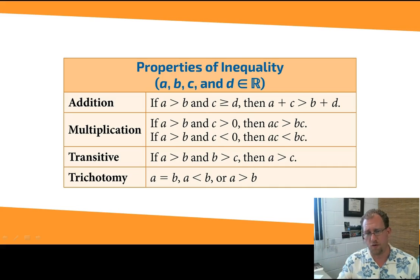If I have like 5 is greater than 4 and 2 is greater than 1, I can add the 5 and the 2, which is 7, and I can add the 4 and the 1, which is 5, and I still have a valid inequality.